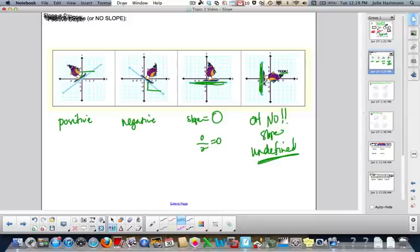Whereas our oh no slope, we might go up two, but we don't have any horizontal change. So two over zero, that's your undefined fraction. That's the difference there.